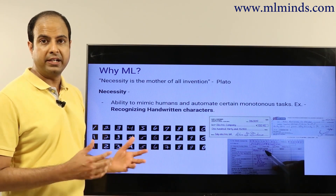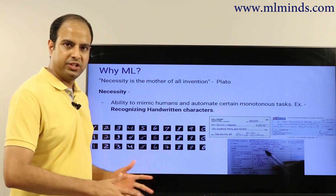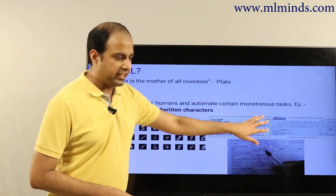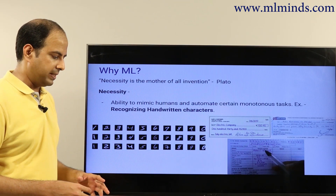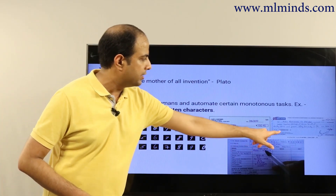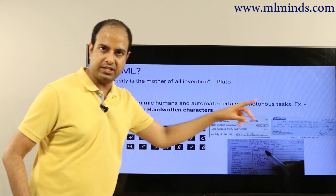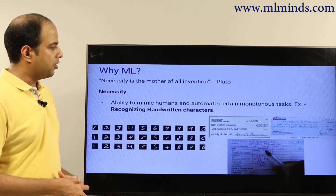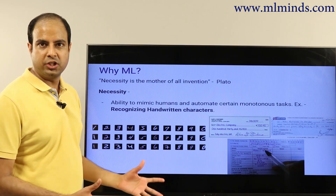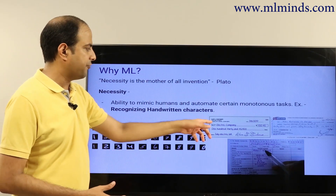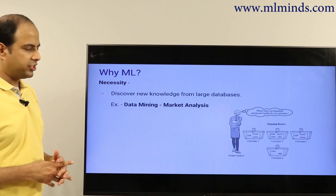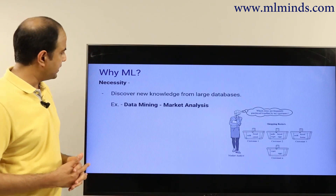For example, when you're filling insurance forms, handwritten text needs to be read by automated mechanisms so it can be processed by downstream systems. Similarly, when you write checks at a bank, there is a process to match the number with what you have written in words. This can be automated if you can recognize digits or any kind of handwritten characters.